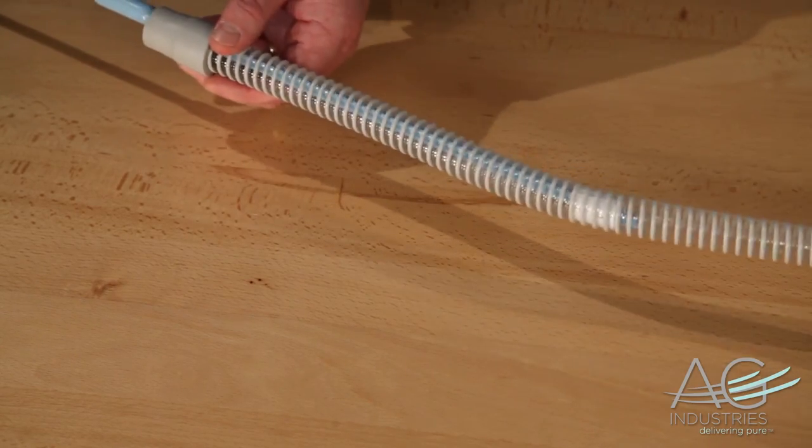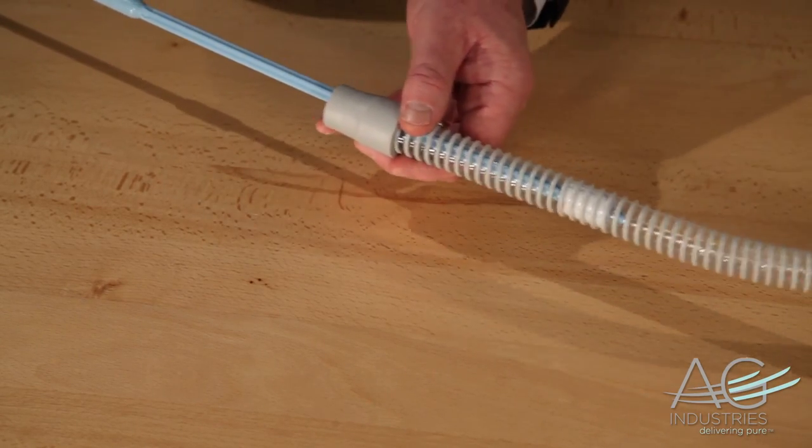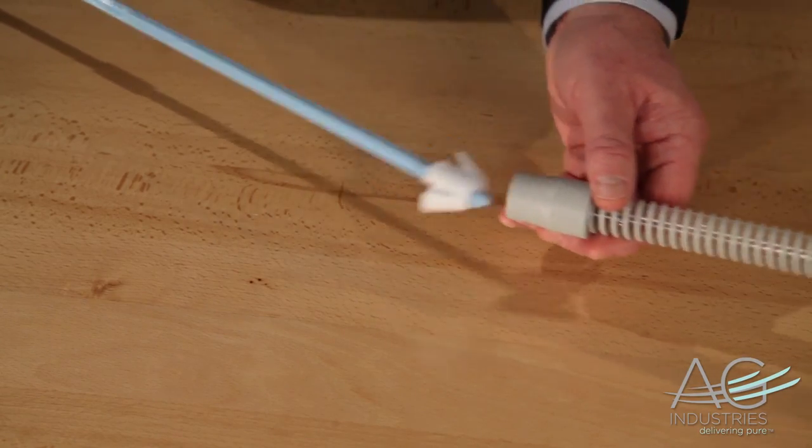Then remove the wand and depending on the length of your CPAP tube, repeat the process from the other end if necessary.